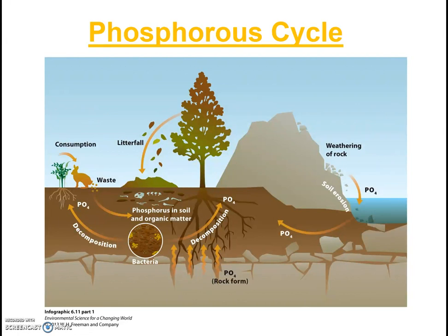Lastly, let's briefly look at the phosphorus cycle. I encourage you to consider pools and processes for this cycle as well, though it won't be part of the assignment. One key thing to note about the phosphorus cycle is that it has no atmospheric component. The water cycle, the carbon cycle, and the nitrogen cycle all have a significant pool in the atmosphere, which makes those cycles quite global in nature. The phosphorus cycle does not have an atmospheric pool, and phosphorus tends to stay more localized in specific regions.